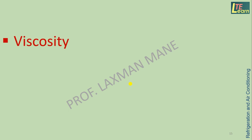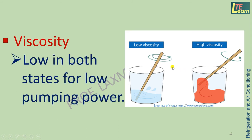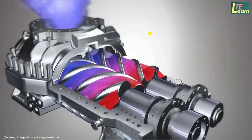Viscosity is the resistance offered by a refrigerant fluid to its flow. When refrigerant has low viscosity, it is easy to move or handle, but when more viscous it is difficult to move and takes more effort. In both states — liquid and vapor — viscosity of refrigerant should be low in order to reduce compression power taken by the compressor.